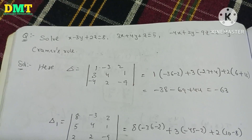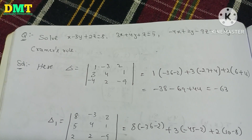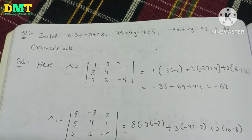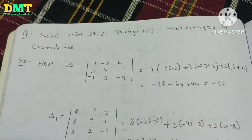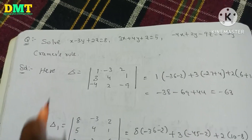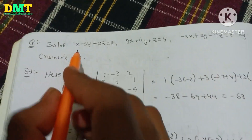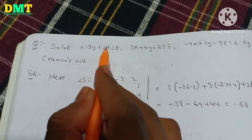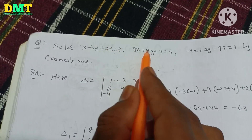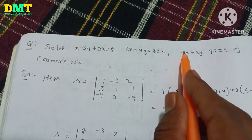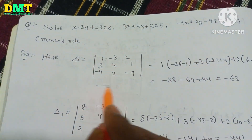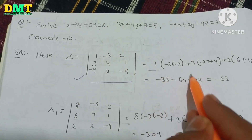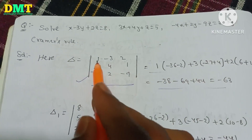First, we have to solve the equation. The matrix is: row 1 is 1, minus 3, 2; row 2 is 3, 4, 1; row 3 is minus 4, 2, minus 9. So we have to find the determinant value.